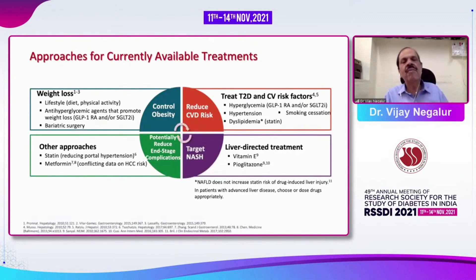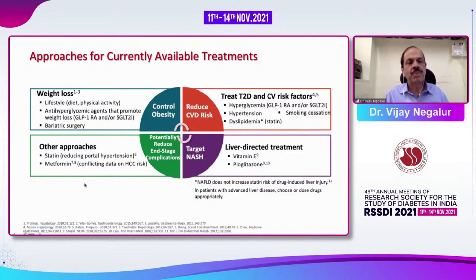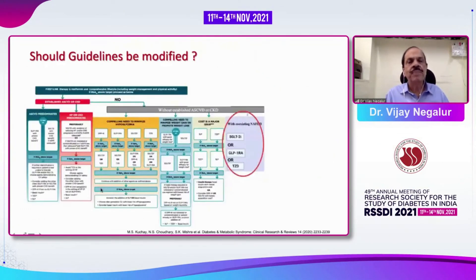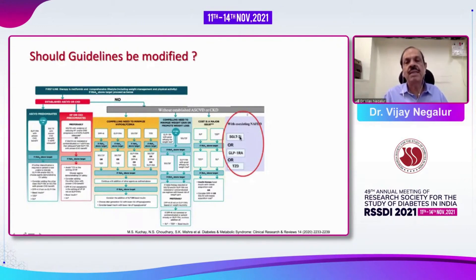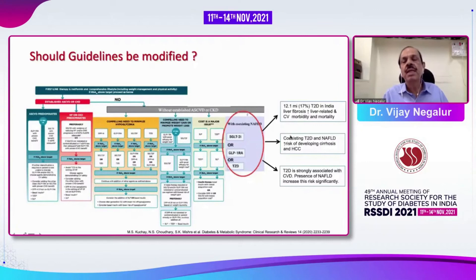The current treatment approach includes weight loss — by lifestyle modification or bariatric surgery — and treating type 2 diabetes and cardiovascular risk factors including hyperglycemia, hypertension, and dyslipidemia. Liver-directed treatments include vitamin E and pioglitazone, along with statins and metformin. Current guidelines need to be modified to include an extra column addressing patients who have pre-existing NAFLD. SGLT2 inhibitors, GLP-1 receptor agonists, and glitazones are preferred drugs for these patients. There are 12.1 million patients in India — 17% of the diabetic population — with high rates of fibrosis and liver-related cardiovascular mortality.